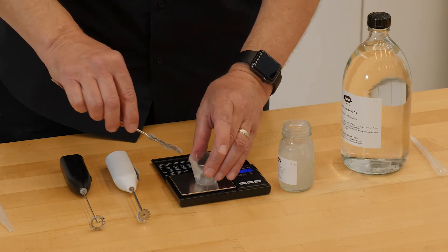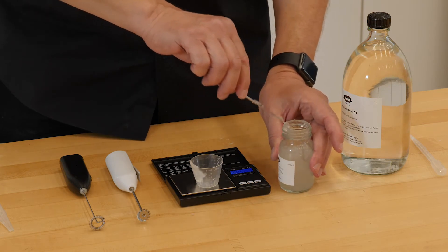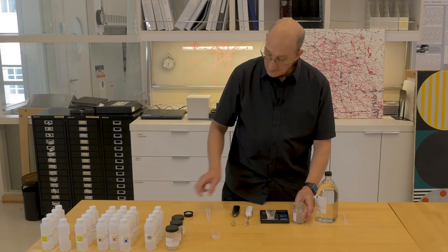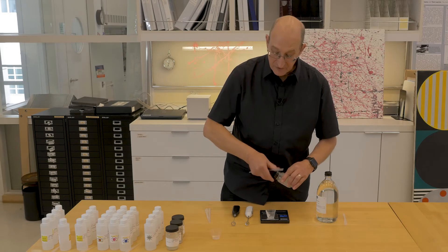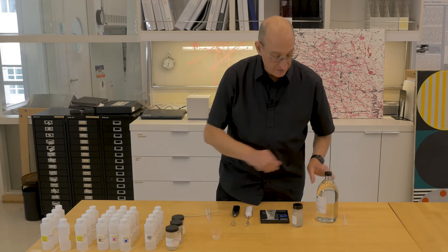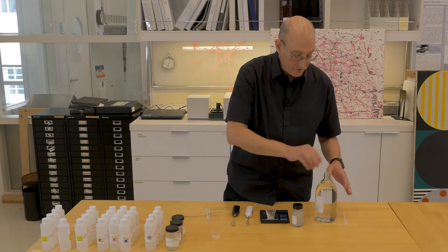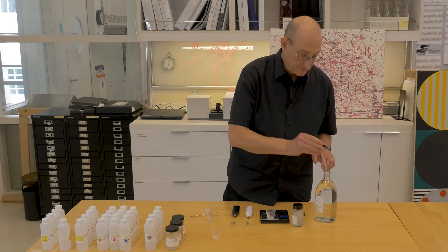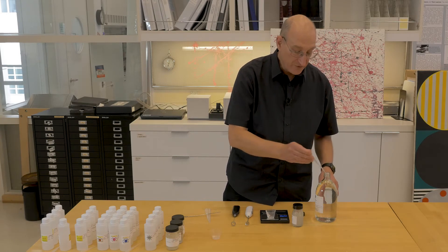So we go to 2 grams of the KSG. We'll add a little bit of cyclomethicone to dilute it to a consistency to our liking. That is purely a matter of personal taste and appropriateness for the surface of the painting.